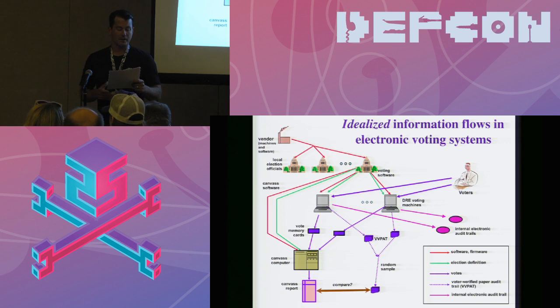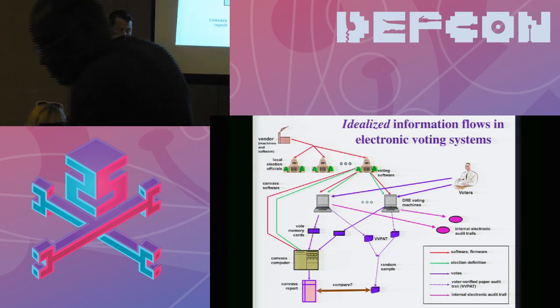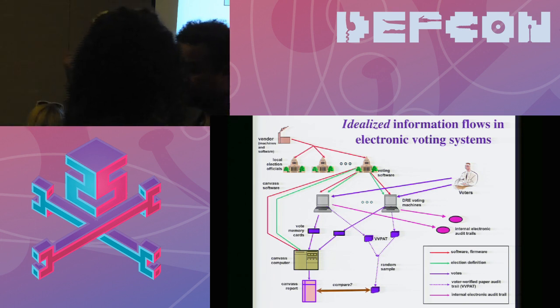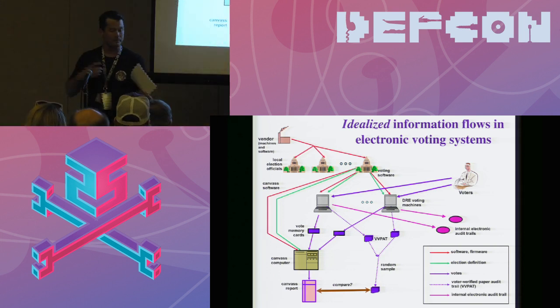And Barbara Simons is the president of Verified Voting, same organization. Barbara has been on the board of advisors of the U.S. Election Assisted Commission since 2008. She published a book called Broken Ballots that you should all read on voting machines that she co-authored with a guy named Douglas Jones. She also co-authored a report that led to the cancellation of Department of Defense Internet Voting Service. And but I have to say that she's also the former president of the Association for Computing Machinery, the largest and oldest international educational scientific society for computing professionals. So, Barbara and David, please come up.